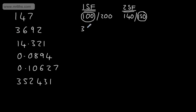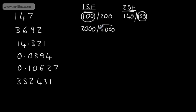So my choices are 3,000 or 4,000. If we look in the next column — the hundreds — we can see that that's going to be greater than 5. Therefore, to the nearest 1,000, rounding to one significant figure, it will be 4,000.